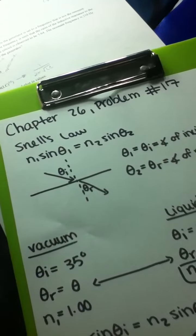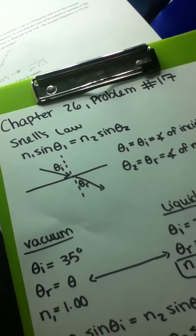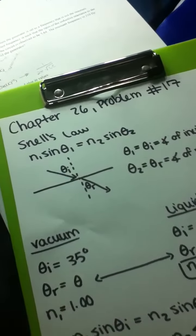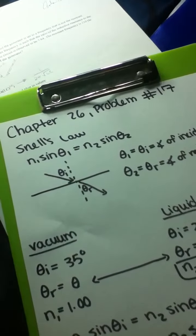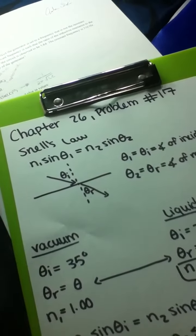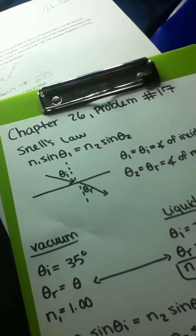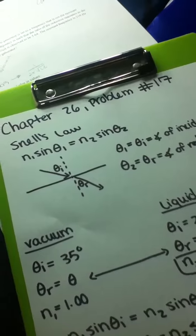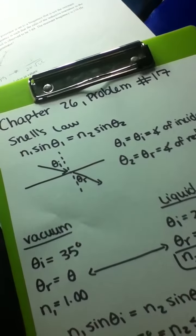Light in a vacuum is incident on a transparent glass slab. The angle of incidence is 35 degrees. The slab is then immersed in a pool of liquid. When the angle of incidence for the light striking the slab is 20.3 degrees, the angle of refraction for the light entering the slab is the same as when the slab was in the vacuum.